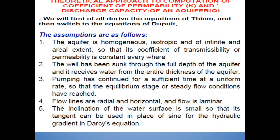Before the derivation, there are some assumptions. The aquifer is homogeneous, isotropic, and of infinite aerial extent, so that its coefficient of transmissibility and permeability is constant everywhere. The well has been sunk through the full depth of the aquifer and receives water from the entire thickness of the aquifer. Pumping has continued for a sufficient time at a uniform rate so that equilibrium or steady flow conditions have been reached. The flow lines are radial and horizontal and the flow is laminar. The inclination of the water surface is small so that its tangent can be used in place of sine for the hydraulic gradient in Darcy's equation.